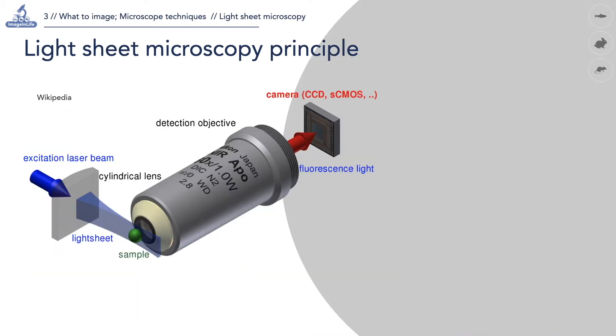This schematic shows that the light sheet is formed by a cylindrical lens and it travels to the sample from the side. The emitted light is collected by a second objective orthogonal to the light sheet. As a consequence of this geometry, all the photons from the illuminated plane are collected simultaneously. An ultrafast and sensitive camera detects at once all the photons from the illuminated plane.